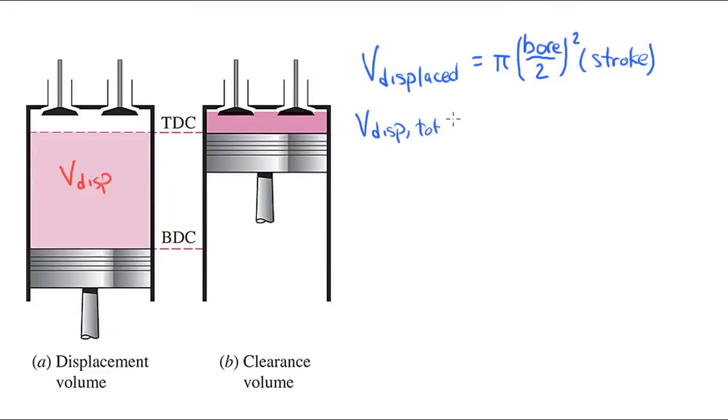The total displacement volume is equal to the displacement volume for one cylinder multiplied by the total number of cylinders in an engine, usually ranging between 3 and 12 cylinders.